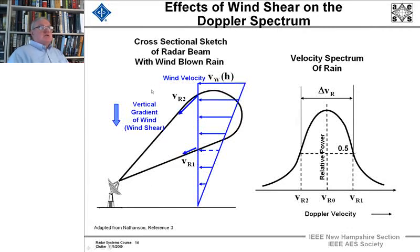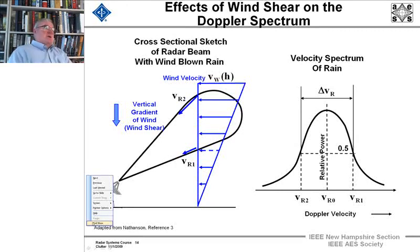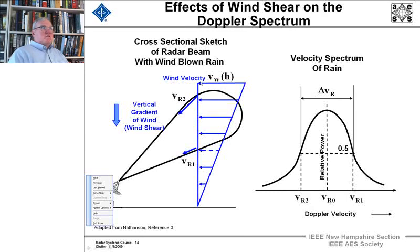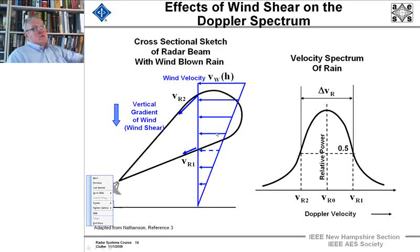Wind shear spreads the Doppler spectrum so it isn't a delta function at a single velocity. Wind velocity varies as a function of height — there's a vertical gradient — which transforms into a velocity spectrum delta-v. For an airport surveillance radar, which has a wide beam to see all aircraft at all altitudes, this will have a significant effect on spectral spread.